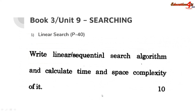Next chapter is Book 3, Unit 9 — searching. Only one topic is there: linear search. Go through page number 40. A question may arise like: write a linear or sequential search algorithm and calculate the time and space complexity of it.